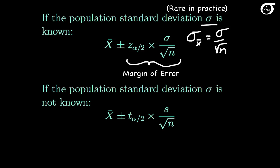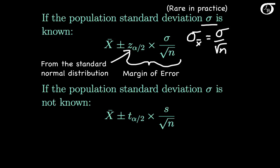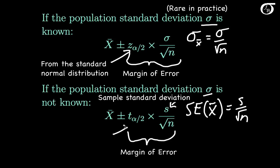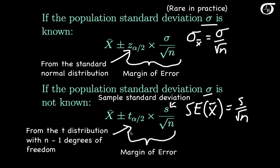If the population standard deviation sigma is known, then we find this z value from the standard normal distribution. But it is very rare that sigma is known, and we typically estimate sigma with s, the sample standard deviation. This quantity is sometimes referred to as the standard error of x bar — s over the square root of n — and that is the estimated standard deviation of the sampling distribution of x bar. So if we are using the sample standard deviation to estimate sigma, this is going to be our margin of error, where the t value is found from the t distribution with n minus 1 degrees of freedom.